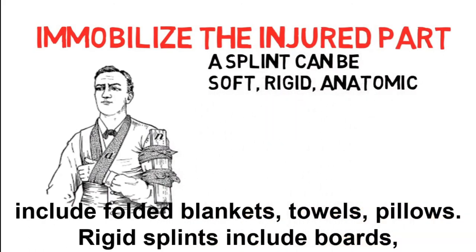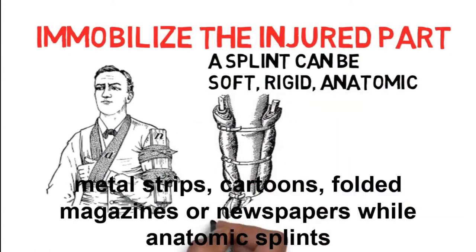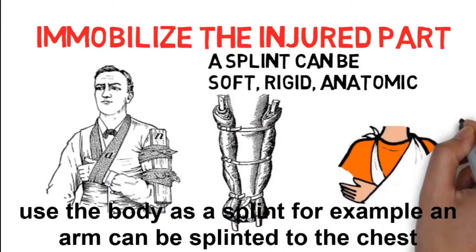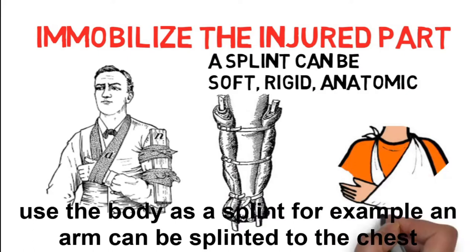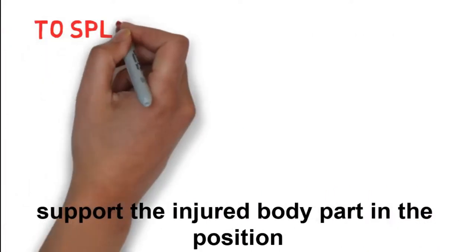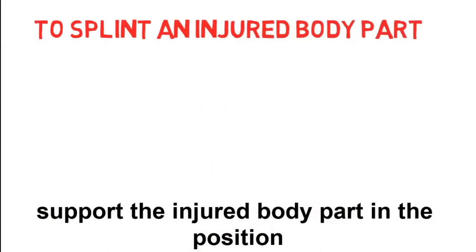There are three types of splints: soft, rigid, and anatomic. Soft splints include folded blankets, towels, and pillows. Rigid splints include boards, metal strips, cardboard, folded magazines, or newspapers. Anatomic splints use the body itself as a splint — for example, an arm can be splinted to the chest.